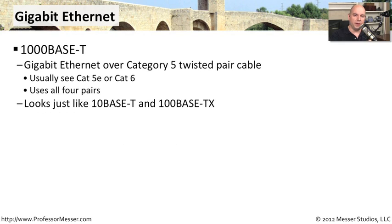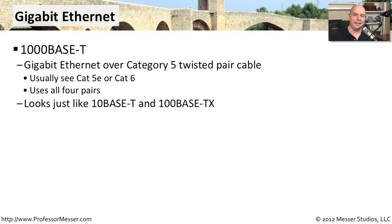As time moved on, we increased from 100 megabits per second to 1,000 megabits per second, or 1 gigabit. The 1000BaseT standard — with 1000 for speed, base for baseband, and T for twisted pair — is gigabit Ethernet over Category 5 cable. There's also Category 5E enhanced and Category 6 that you might see used for 1000BaseT. One interesting thing: 1000BaseT uses all four pairs inside the Ethernet cable, whereas 10BaseT and 100BaseTX only used two pairs.